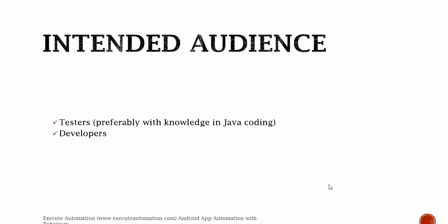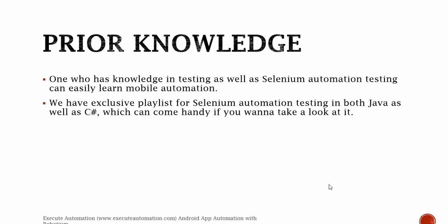The intended audience for this video series is testers, preferably with knowledge in Java coding, and also developers. One who has good knowledge in testing as well as Selenium automation testing can learn mobile automation testing very easily, since most of the concepts are similar. In Robotium we use the same Selenium-type concepts, like identifying objects using ID, name, or XPath.